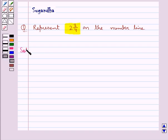Let's move on to the solution now. We need to represent 2 and 3 upon 4 on the number line.